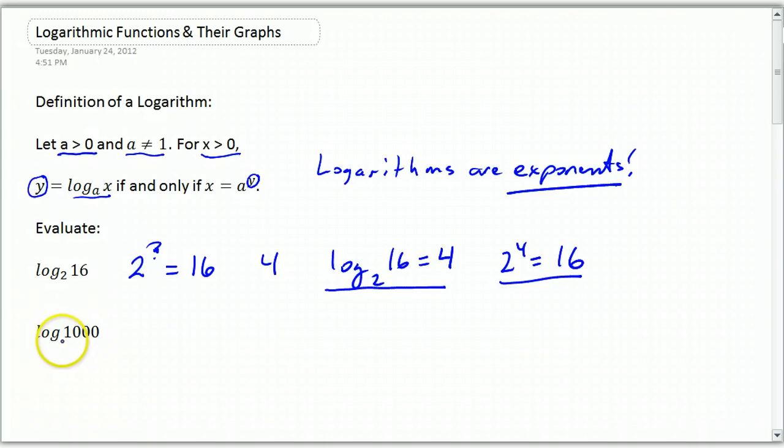This is called a common log. You notice there's no base written right there. Since there's no base written there, we assume it to be 10. That's called a common logarithm. And this is saying, what is the power of 10 that gives us 1,000? And the answer is 3, because 10 to the 3rd equals 1,000.